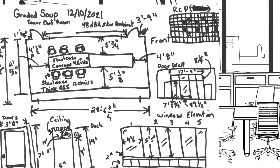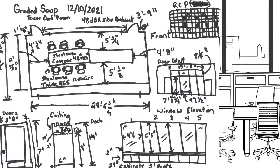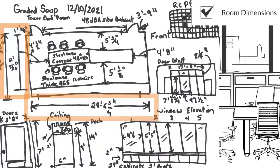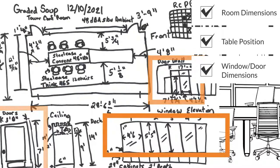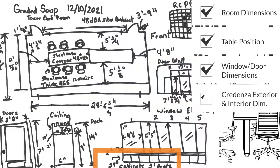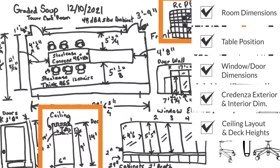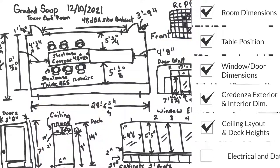I wanted to review and make sure I got all the dimensions I needed with my laser rangefinder and tape measure. I have the basic room dimensions, the distance of the table between all walls and the table dimensions, the window and door dimensions, credenza exterior and interior dimensions, ceiling and deck heights. It looks like I missed getting measurements on locations of existing infrastructure, including power and data. Let me get those.